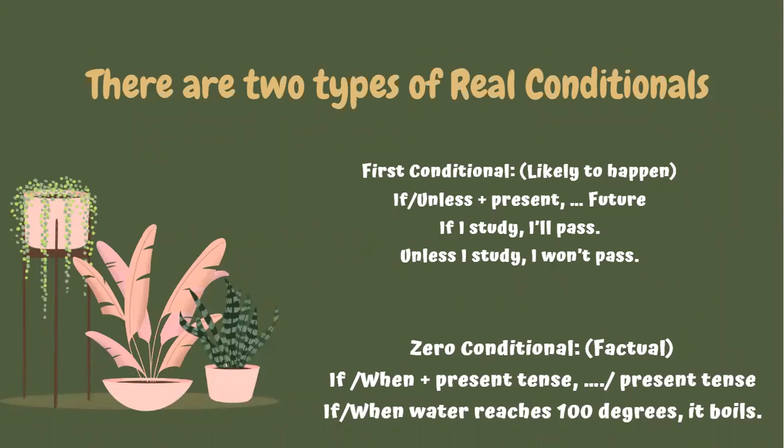The first conditional speaks about something that is likely to happen. We use 'if' or 'unless' with present and future forms. For example: 'If I study, I'll pass' and 'Unless I study, I won't pass.'